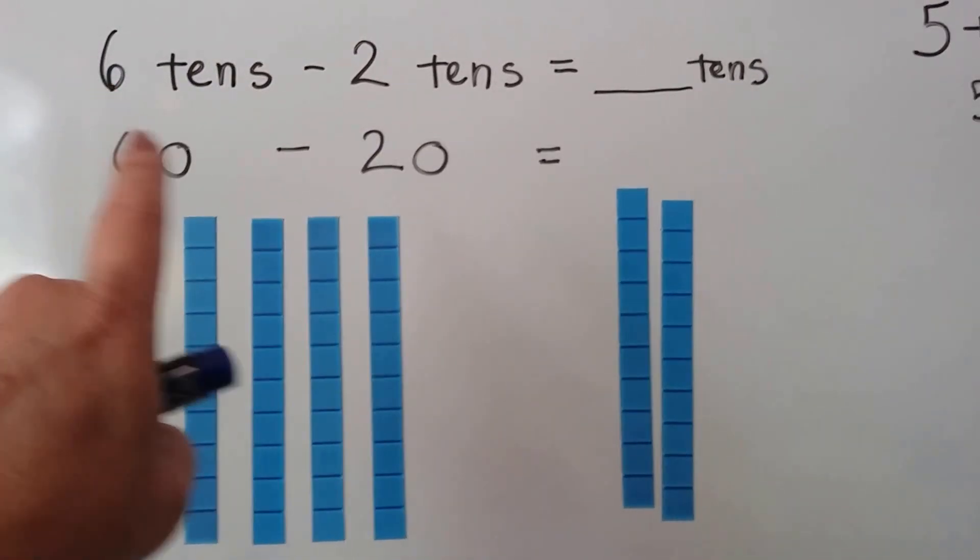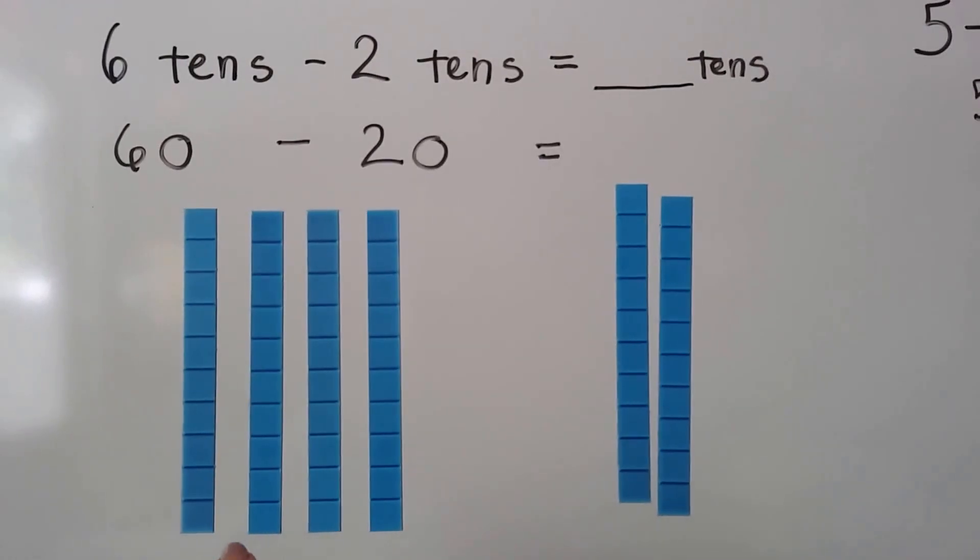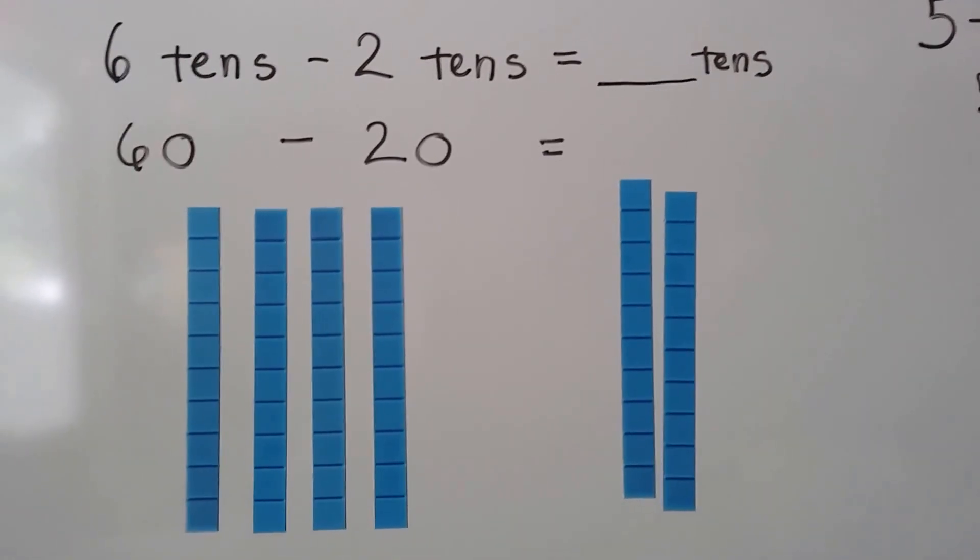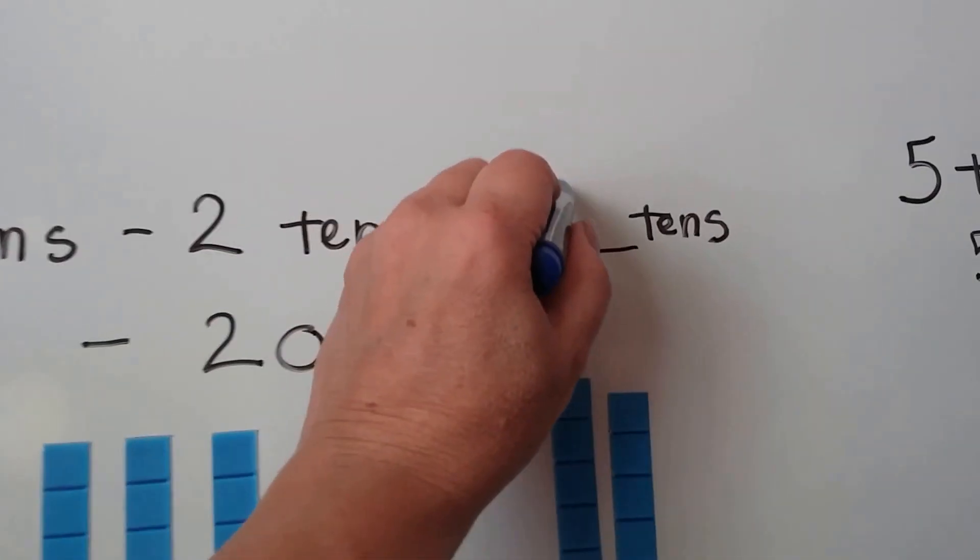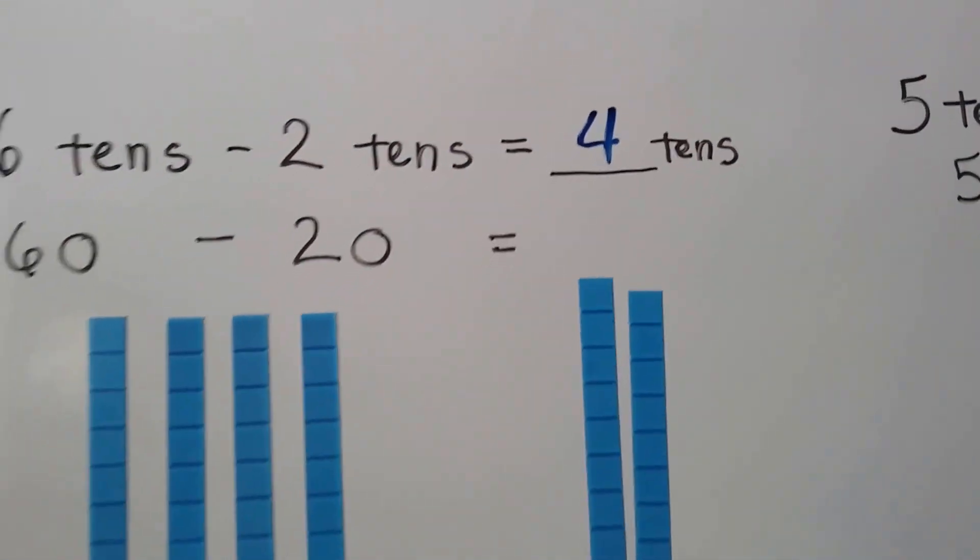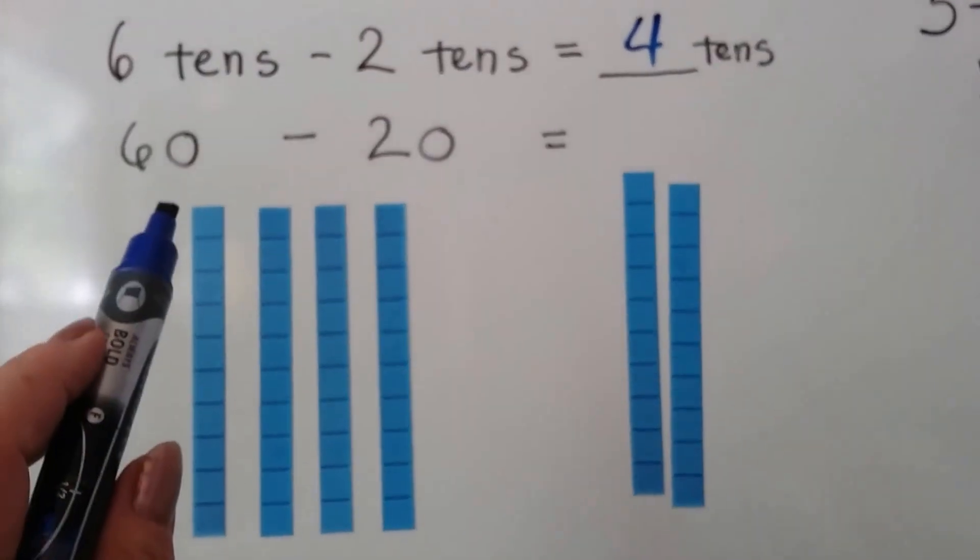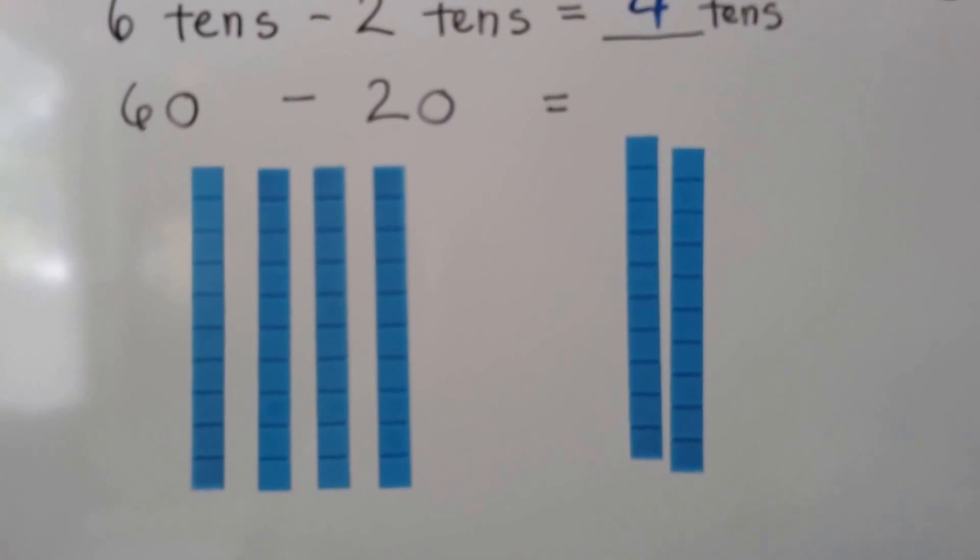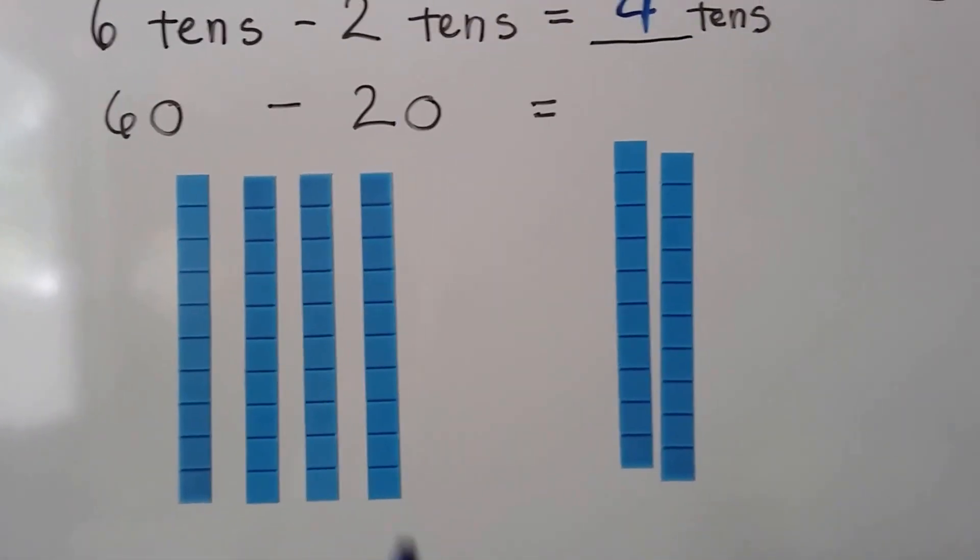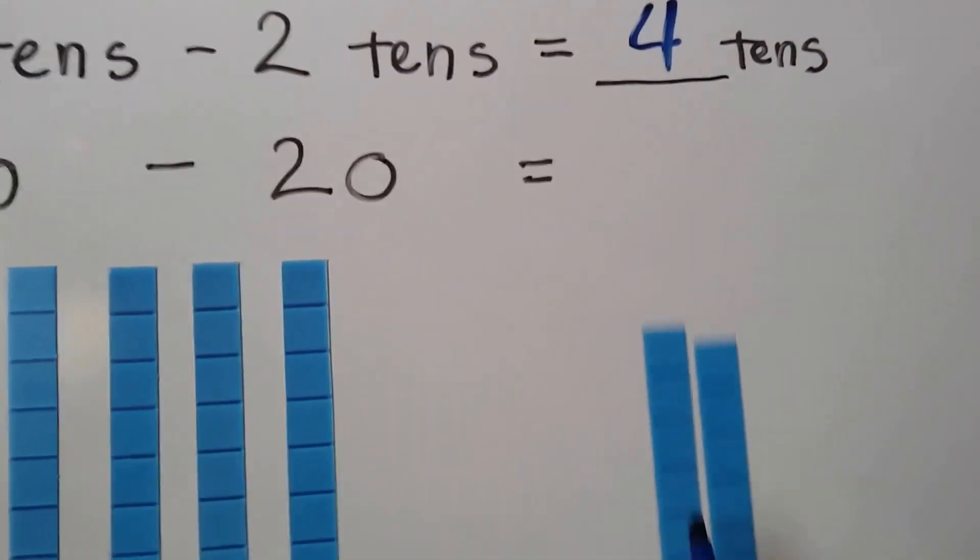We think six minus two. Well, that's four. So six tens minus two tens is four tens. That means 60 minus 20 is ten, twenty, thirty, forty. Four tens is forty.